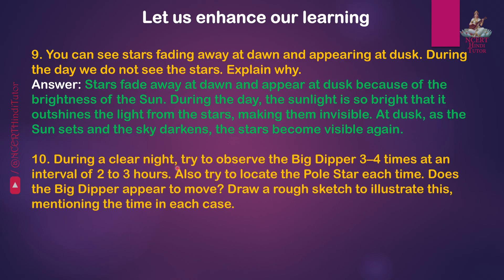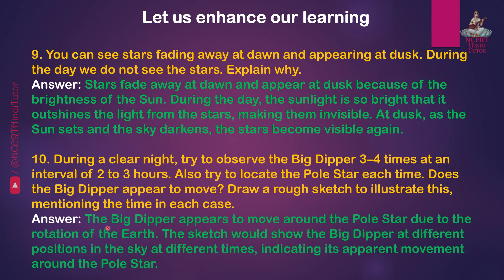Question 10: During a clear night, try to observe the Big Dipper three to four times at an interval of two to three hours. Also try to locate the pole star each time. Does the Big Dipper appear to move? Draw a rough sketch to illustrate this, mentioning the time in each case. Answer: The Big Dipper appears to move around the pole star due to the rotation of the Earth. The sketch would show the Big Dipper at different positions in the sky at different times, indicating its apparent movement around the pole star.